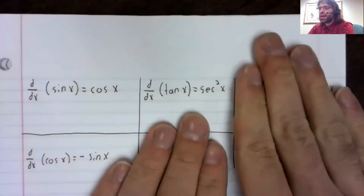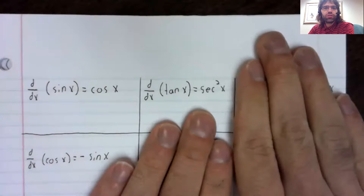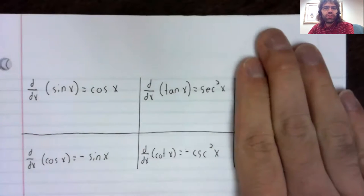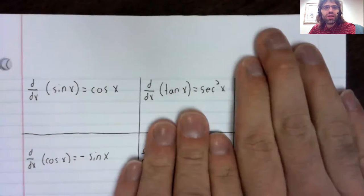That's because if you have tangent and take its derivative, secant appears.